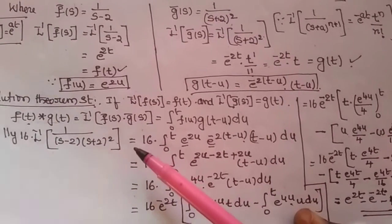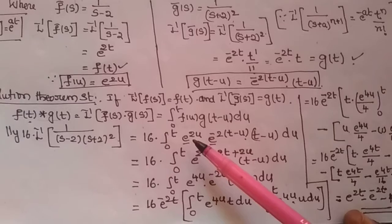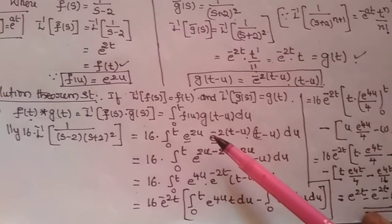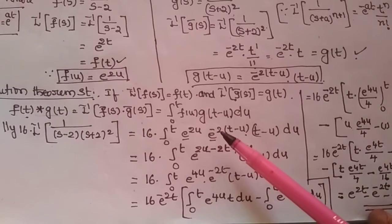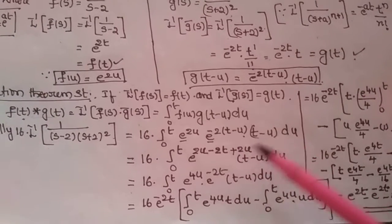So, for our problem applying this, 16 into integral 0 to t, f of u is nothing but e power 2u, g of t minus u is nothing but e power minus 2t into t minus u into t minus u du.